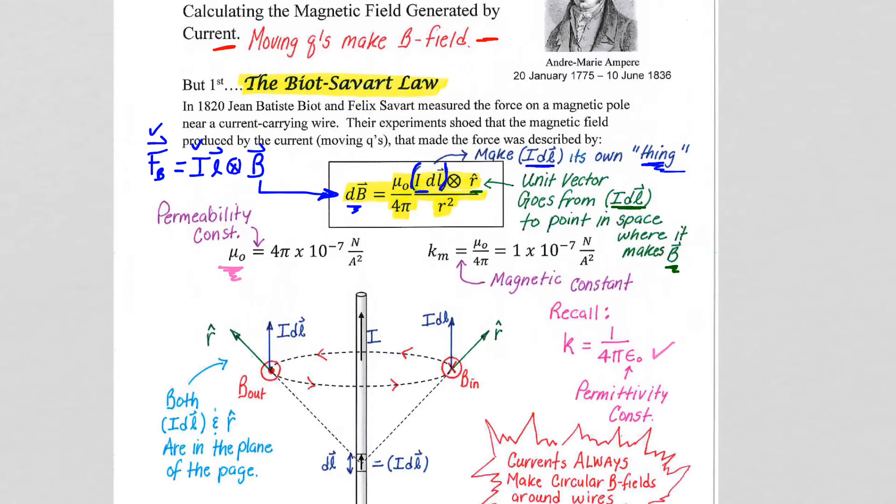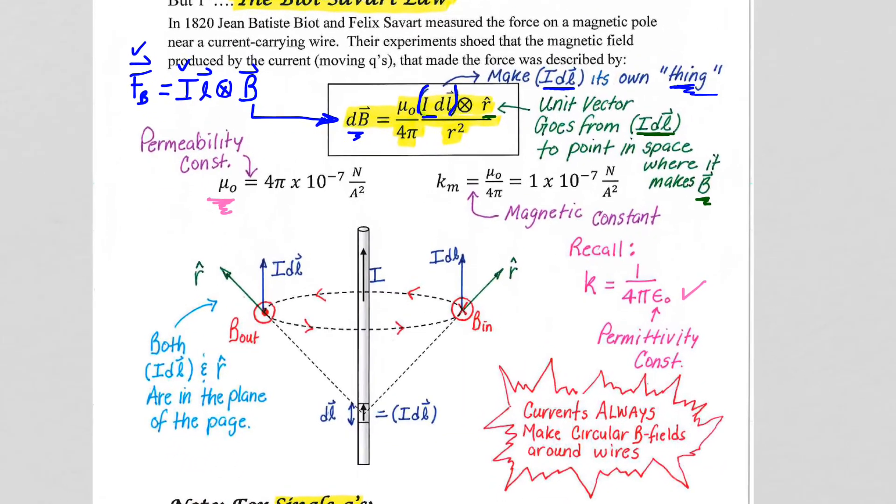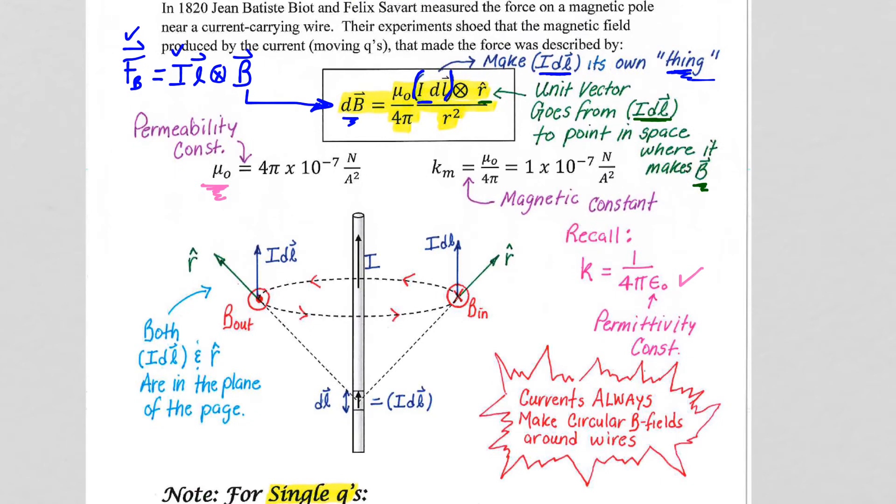But again, the constants are there just as a means of keeping our units and measures straightened out. Now, let's see how the Biot-Savart law is applied. So if we have a current in a wire, so we have our I here, so the wire is running straight from the bottom to the top of the page. The current goes up.